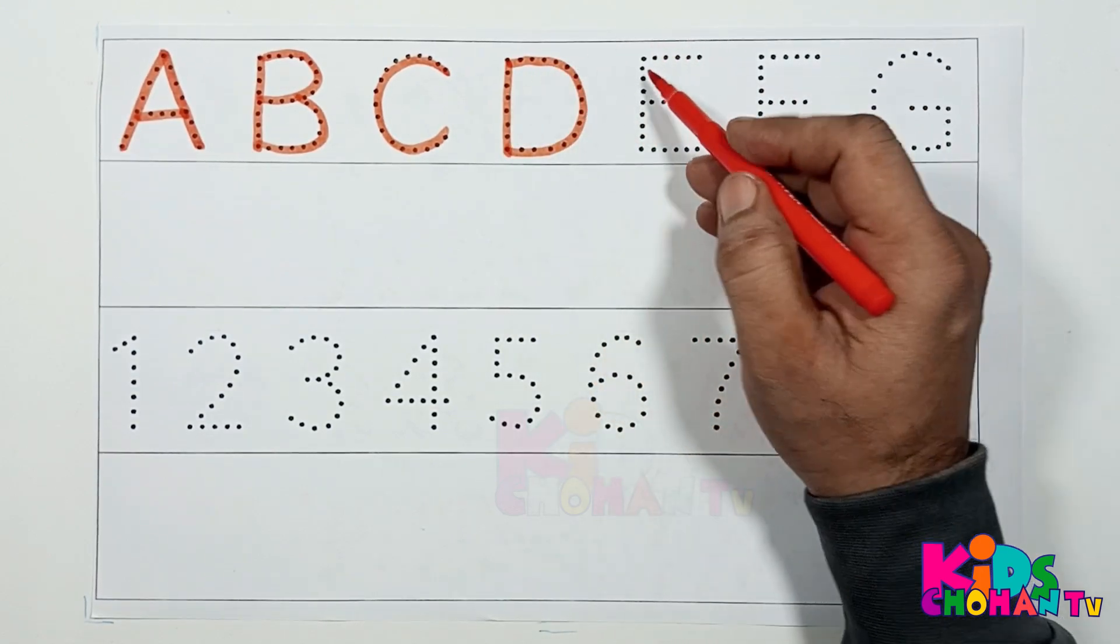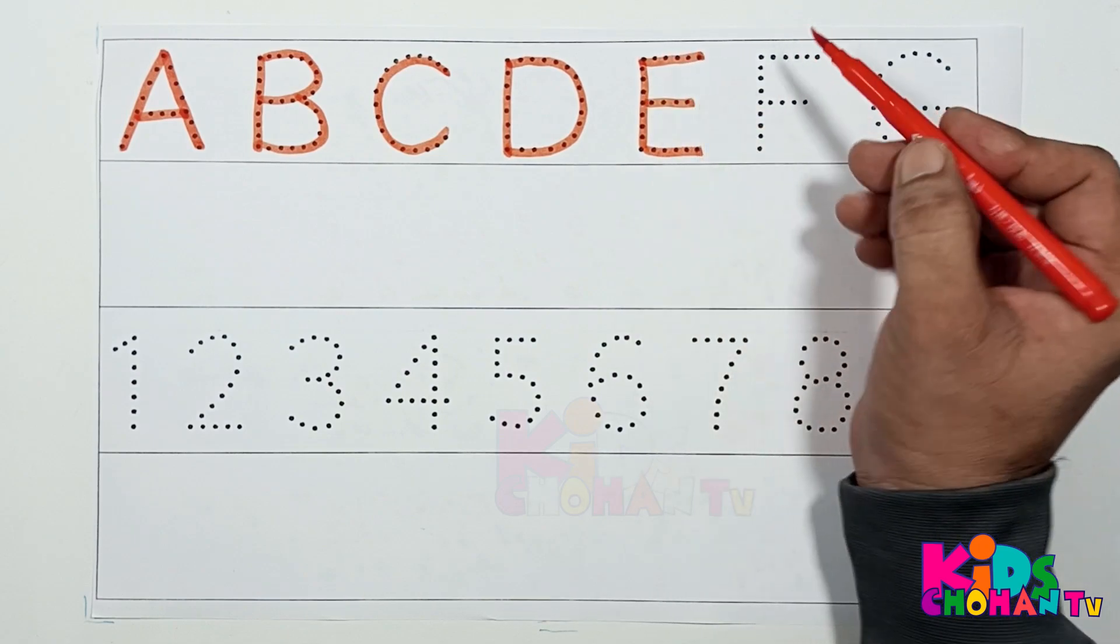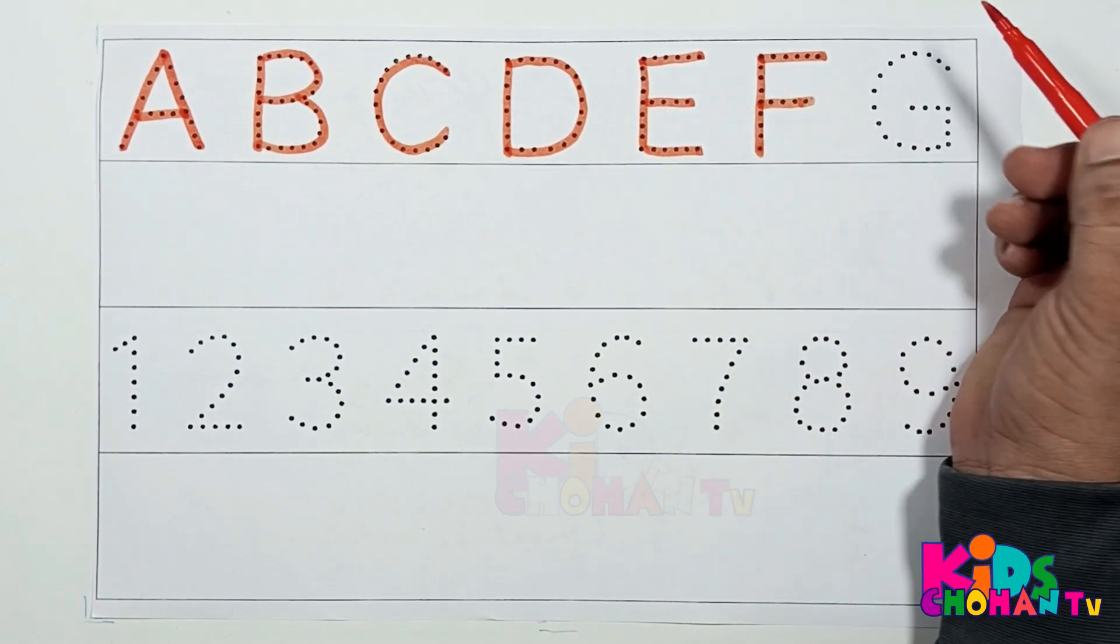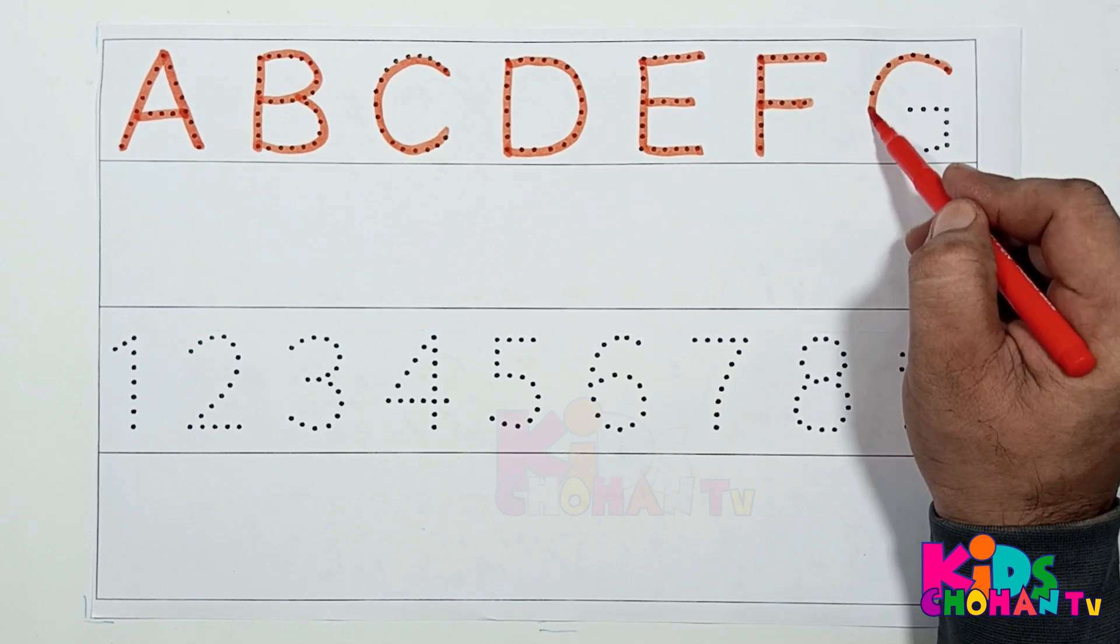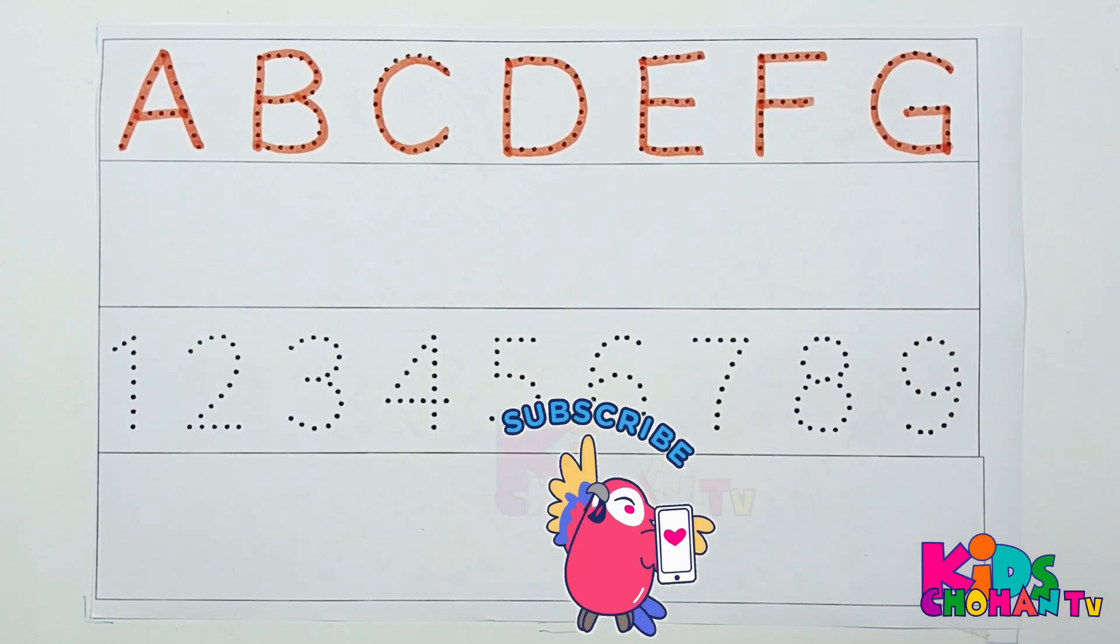D, D for Doll. E, E for Elephant. F, F for Fish. G, G for Goat.